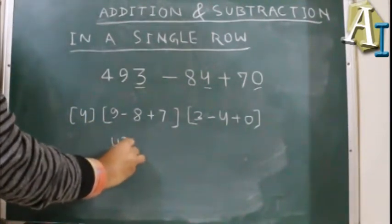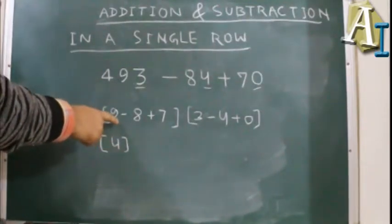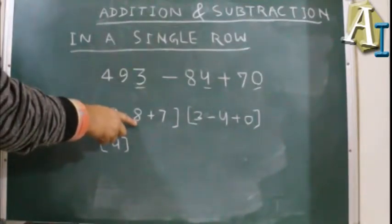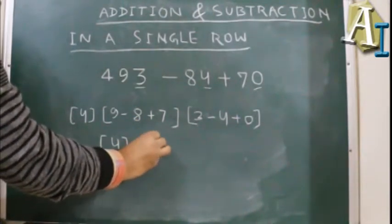Now we will write the hundred place as it is. Then we come to this: 9 minus 8 is 1, 1 plus 7 is 8.